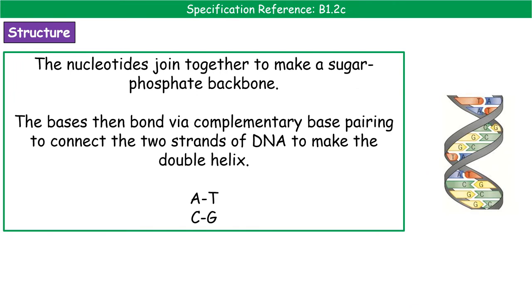The reason those bases are important is because they hold the structure of the double helix together, and they do this through complementary base pairing — meaning they join in specific pairs. A always joins with T, and C always joins with G. So pointy letters go together and curly letters go together: A and T, C and G. That's complementary base pairing that holds the two strands of DNA together to make the double helix.